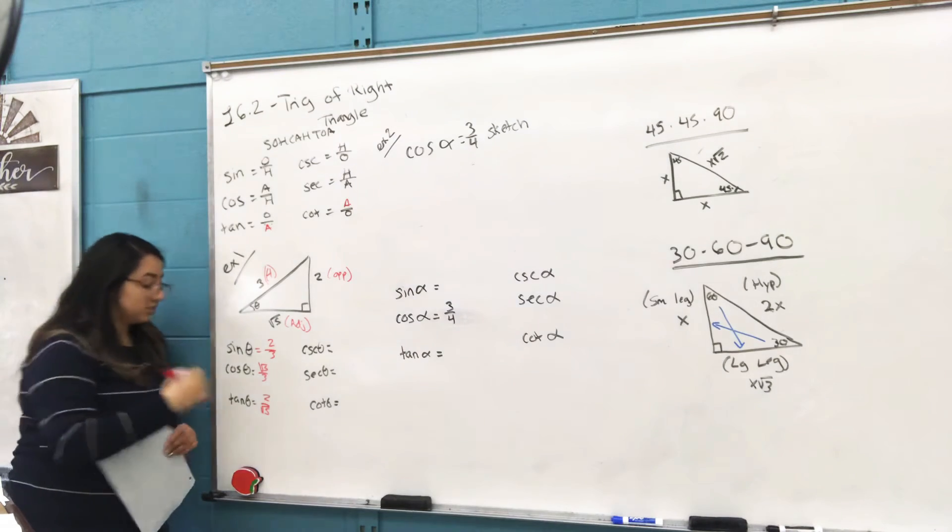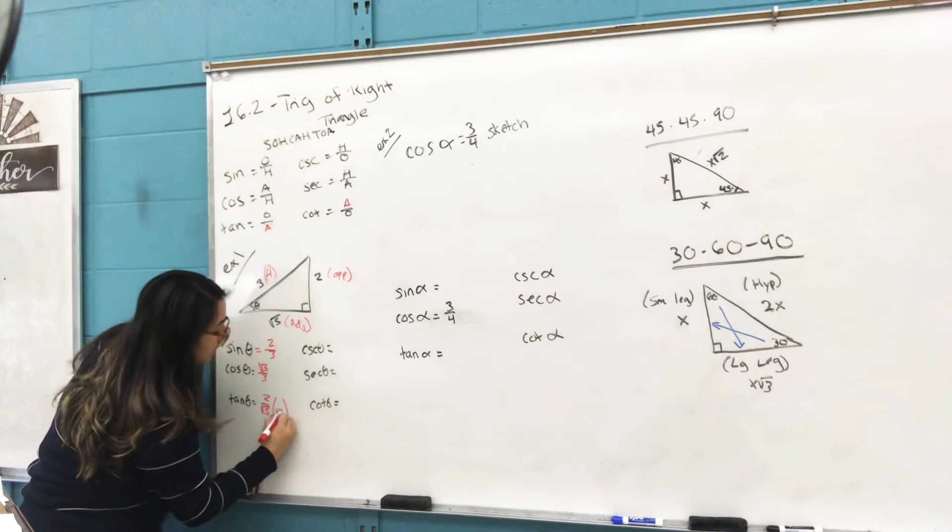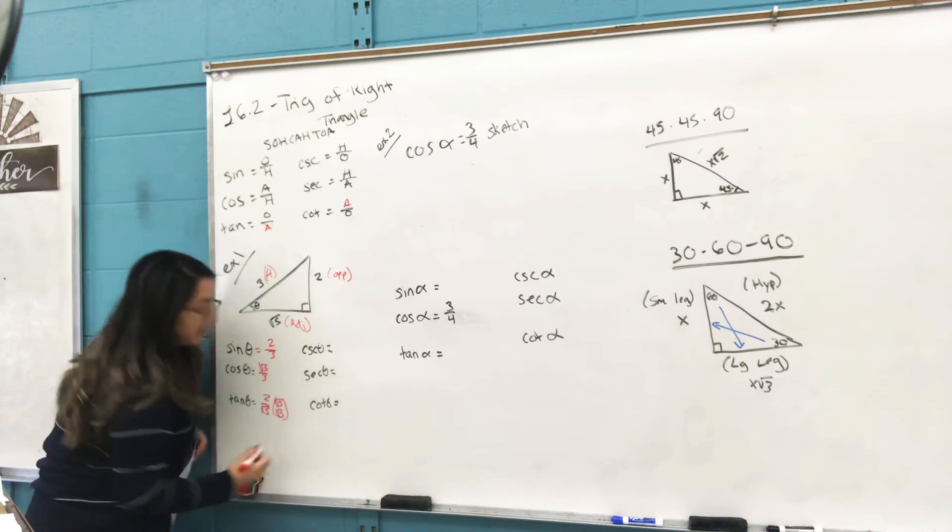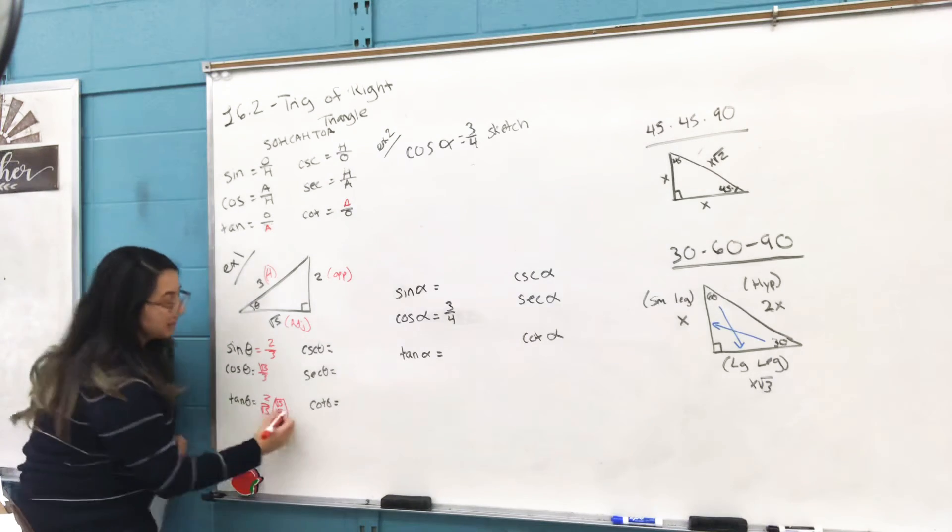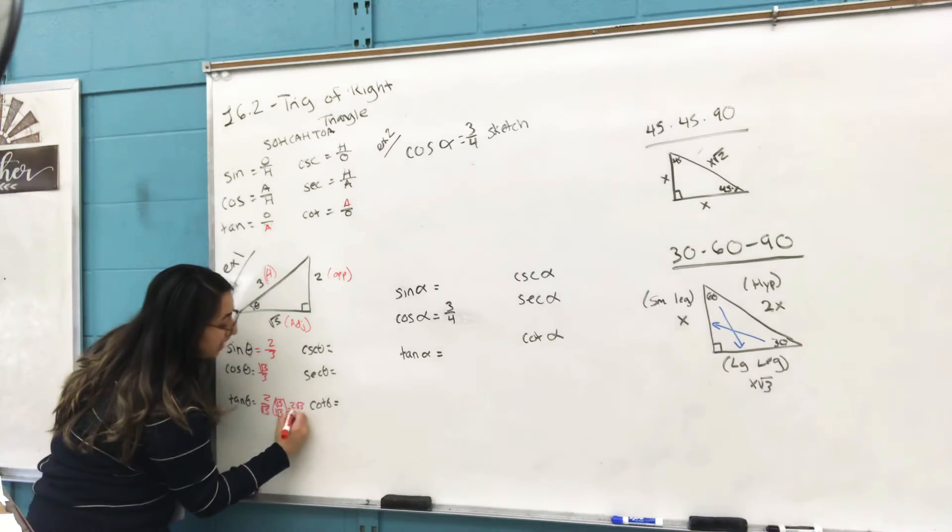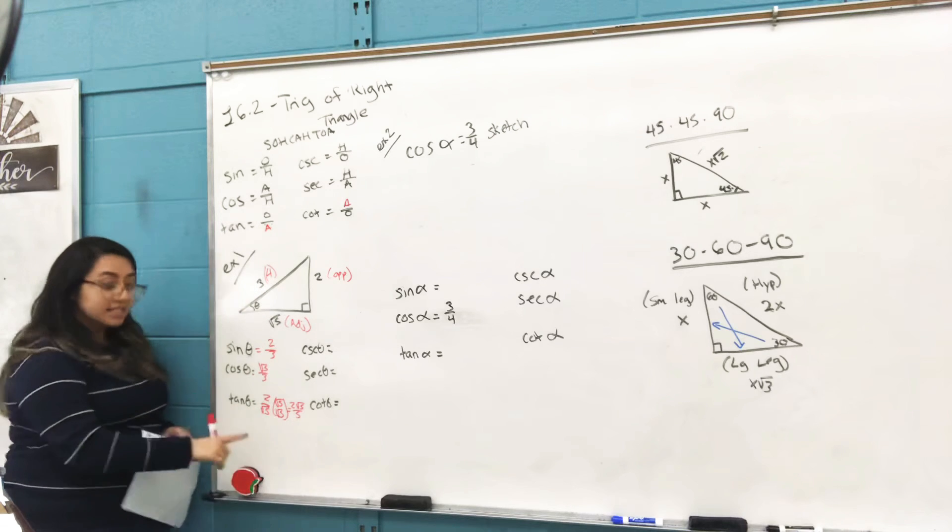And on your booklet it says to leave it like that. I wouldn't want you to leave it like that, so you need to continue and rationalize the denominator, meaning you multiply it by the denominator. In this case, your answer would be 2√5 over 5.